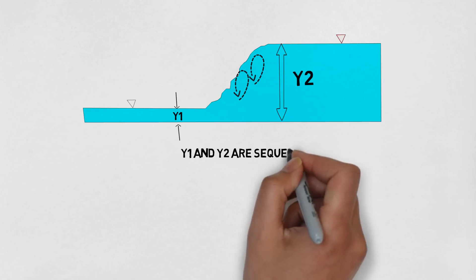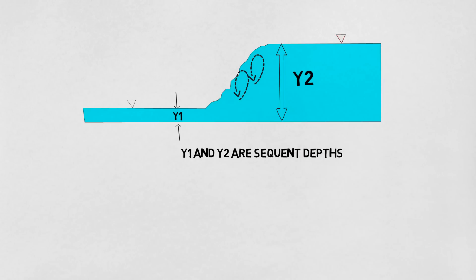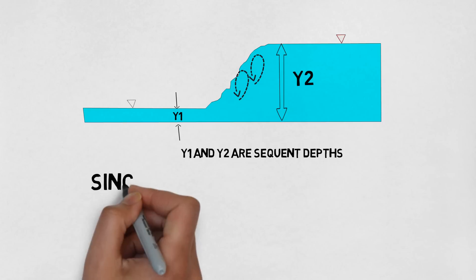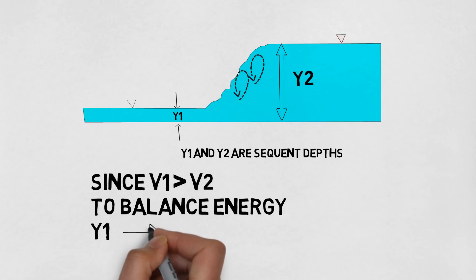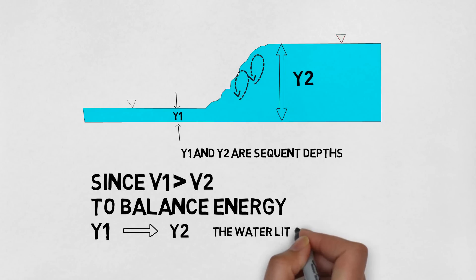Since the supercritical velocity is always greater than the subcritical velocity, to compensate for this energy, the depth y1 has to turn into depth y2, meaning the supercritical depth y1 turns into a subcritical depth y2, for the same energy. The water literally jumps.